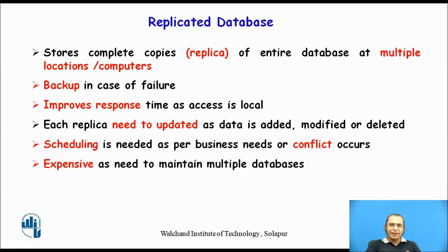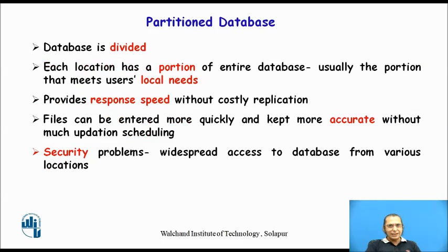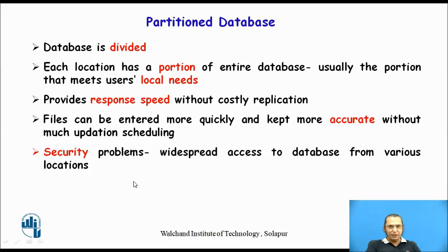The last type of database is the partition database, where the database is divided and a part is located at each database location, depending on local need. This combines the advantages of centralized and replicated databases — it gives fast response time, files can be entered more quickly and kept more accurate without much updating or scheduling required. Security remains a concern since it has multiple locations.